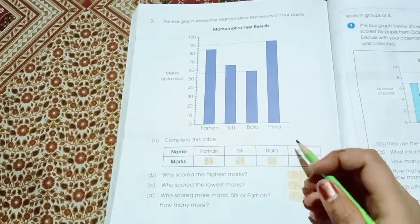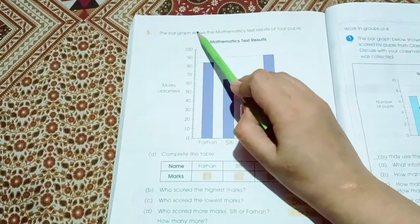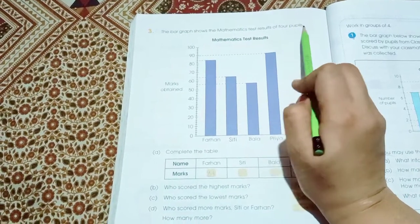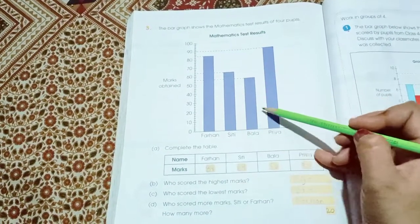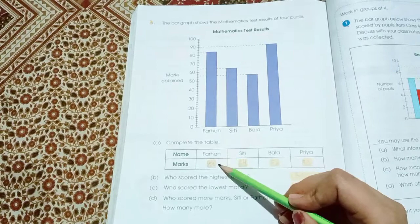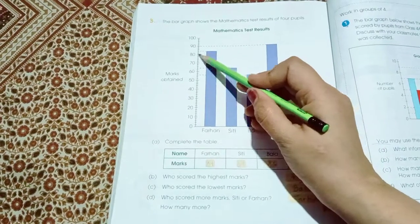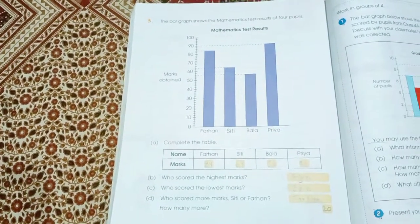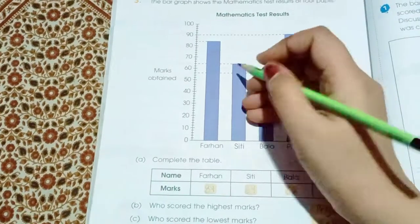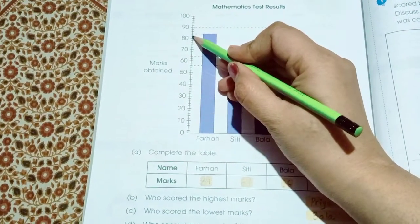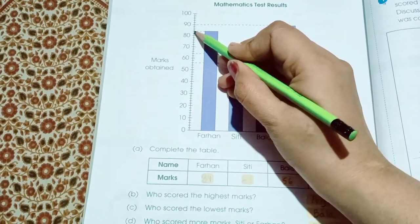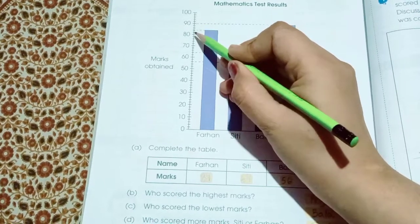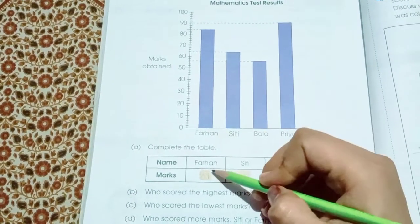Page number 237. The bar graph shows the mathematic result of 4 people: Farhan, Siti, Bala and Priya. Farhan's marks is 84 because the difference between the numbers is 4. Each number is having 2, 4, 6, 8 and then 10. So the number is 84.